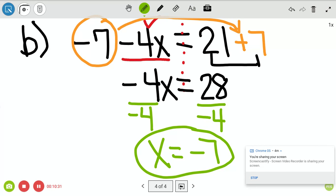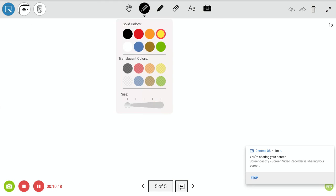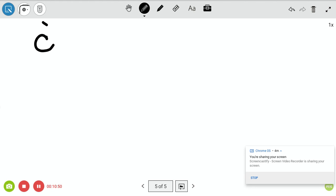So we moved the constant, which, again, constant goes over. Negative becomes a positive. Then we combine and divide. Alright, let's try a couple more for today. Alright, so the next one, let's go with 6x plus 1 equals negative 5.